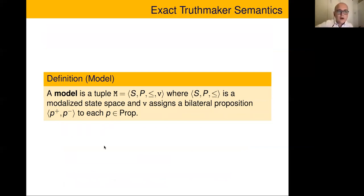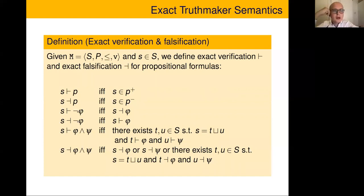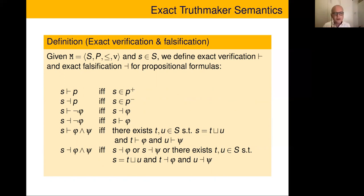Our model in the logical sense is a modalized state space with a valuation that assigns a bilateral proposition to each atom. This is analogous to the Hintikka approach. Now let me give the definitions of exact verification and exact falsification — when a state makes a sentence exactly true or false. This notion of exact truth making means the state has no irrelevant content: nothing in it is unrelated to making that sentence true.